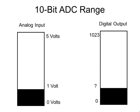Let's say our ADC was, instead of 8 bits, a 10-bit ADC. That means each of its steps are going to be that much smaller. With a 10-bit number, we can represent numbers from 0 to 1023. So let's say our analog voltage was 1 volt — what's the digital output going to be?